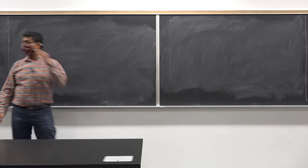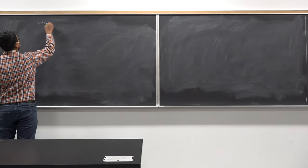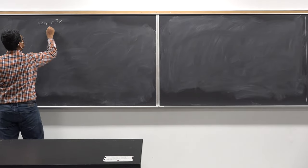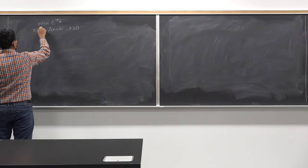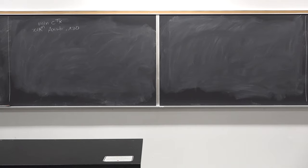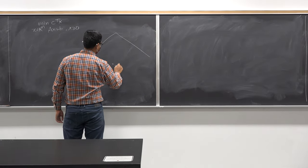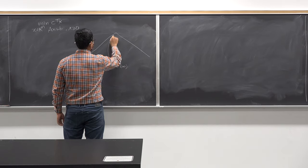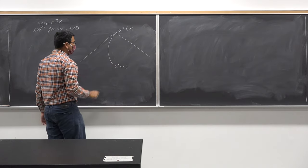In the previous class we were talking about the central path and how to solve a linear programming problem. We have my LP and we talked about the central path approach, where we have the set and this is my x star infinity, and I want to get to my x star 0 by being close to this central path.